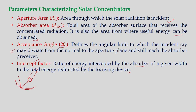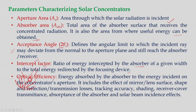Some radiation may not strike the absorber — it may go off and not reach it, so the intercept factor needs to be considered. We always look for unity but will not always achieve it. Optical efficiency defines the ratio of energy absorbed by the absorber to the energy incident on the concentrator's aperture. It includes the effect of mirror or lens surface shape and reflection/transmission losses, tracking accuracy, shading, receiver cover transmittance, absorptance of the absorber, and solar beam incidence effects.